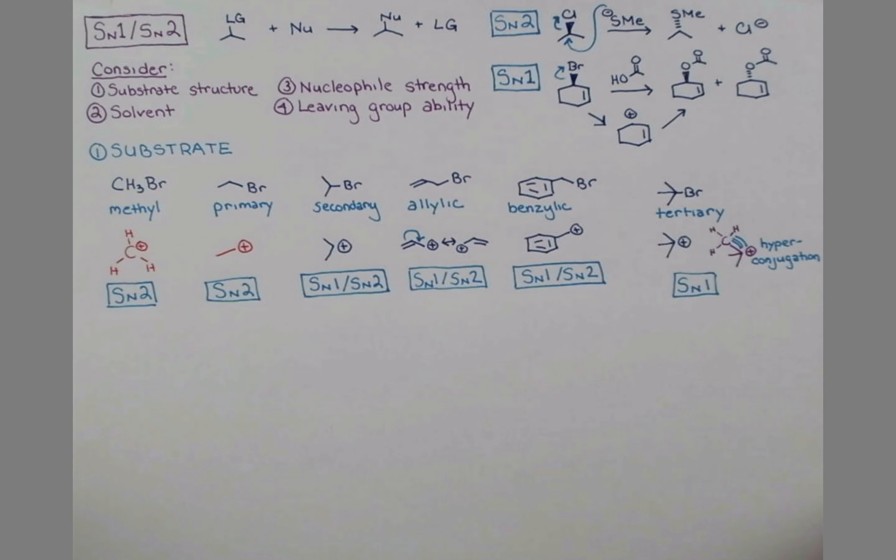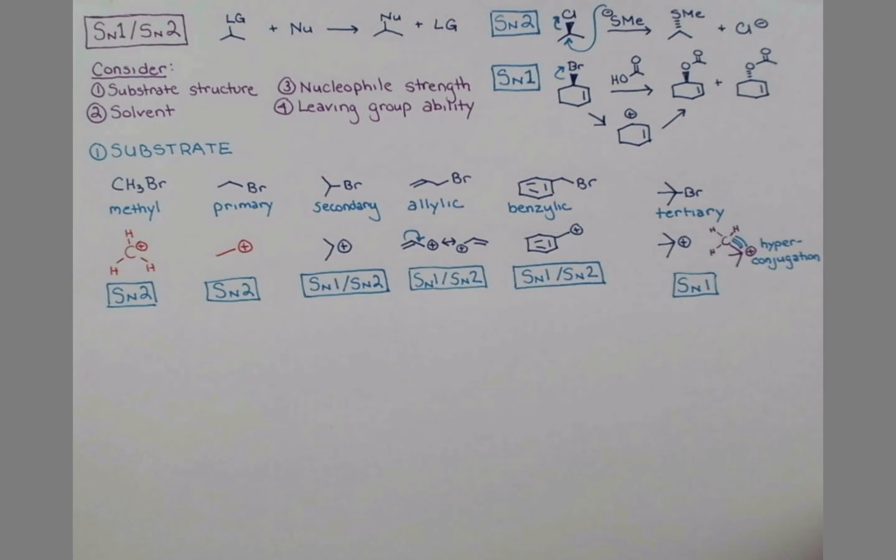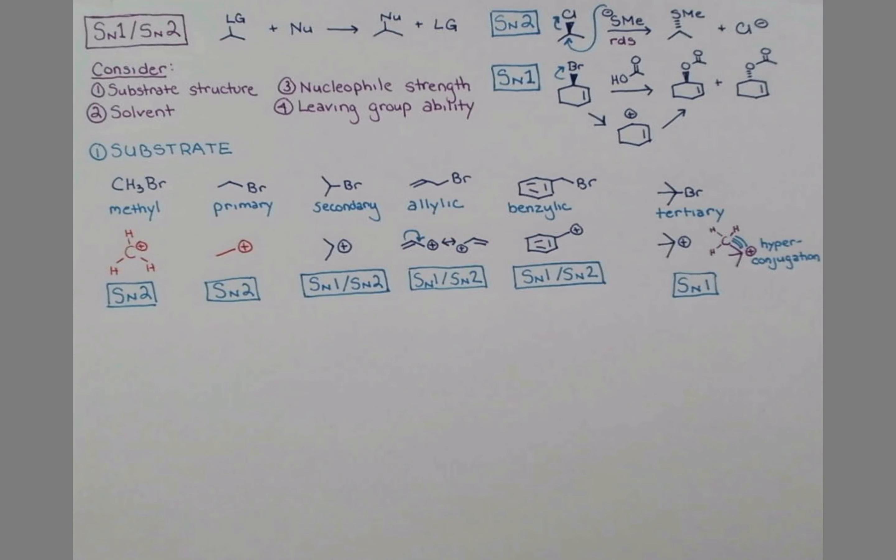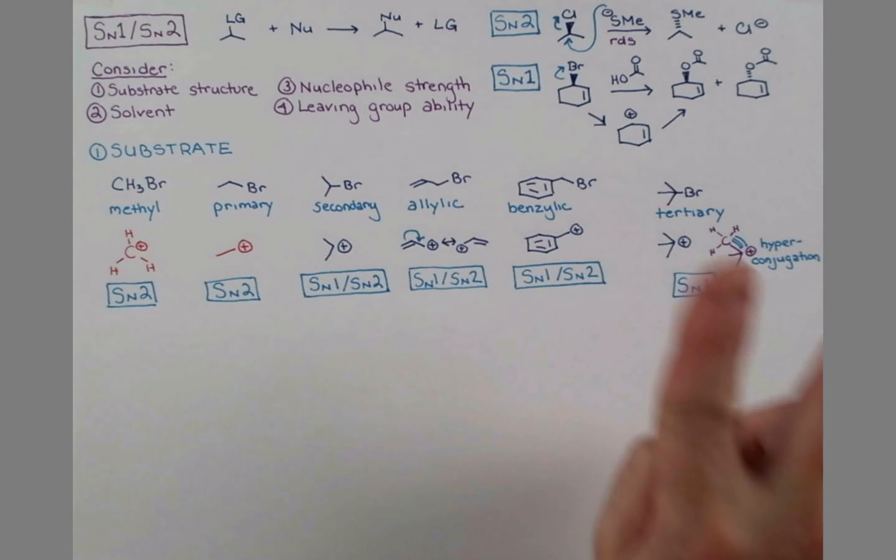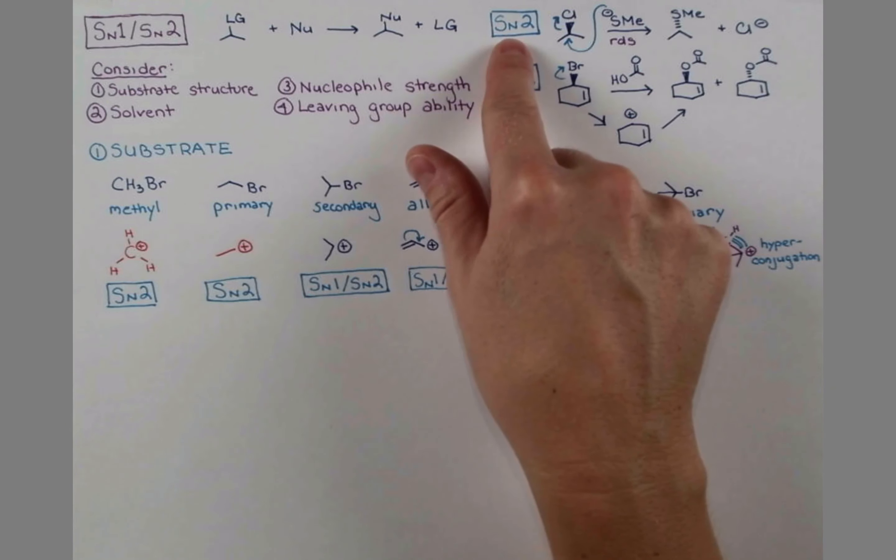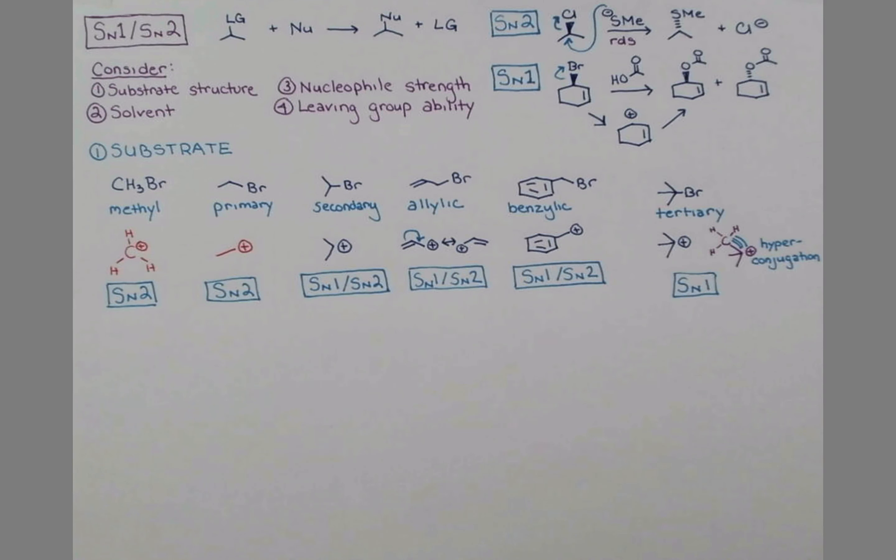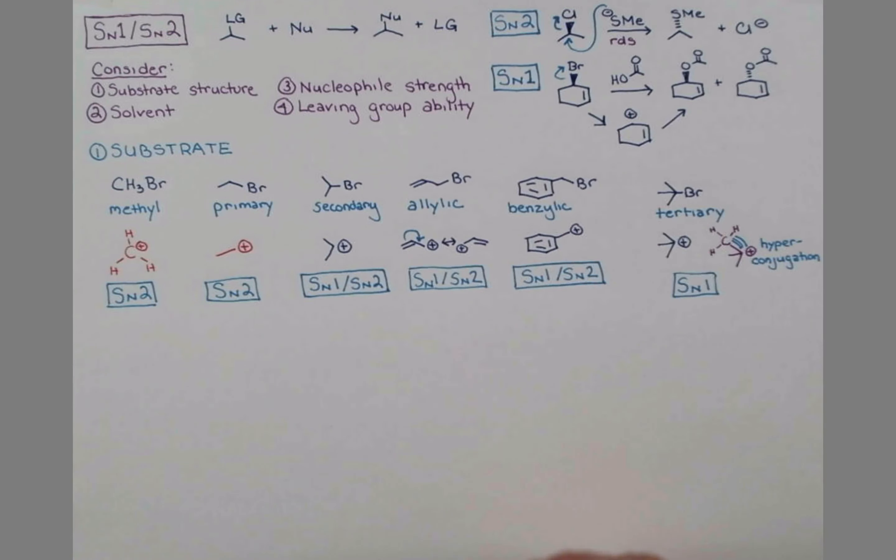I want to back up just for a second and tell you why the SN1 and SN2 reactions are named the way that they are. In the SN2 reactions, we have this single reaction step. Well, when we have one step, that is the rate determining step of the reaction. So the rate is determined by this nucleophile coming in and pushing out our leaving group. That rate depends on both of these reagents. Two molecules are involved in the rate determining step. So SN2 stands for substitution, nucleophilic, bimolecular—two substrates reacting in this step.